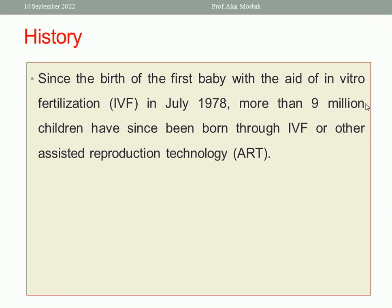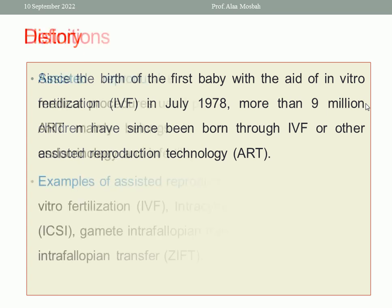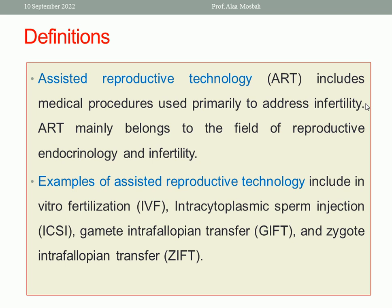The first successful IVF resulting in a live baby was in 1978. Since that date, more than nine million children have been born through IVF or other Assisted Reproductive Technology. Assisted Reproductive Technology are procedures used to manage infertility or to assist any couple with infertility, and ART mainly belongs to the field of reproductive endocrinology and infertility.